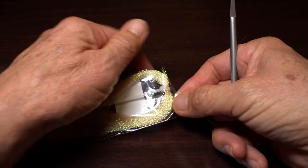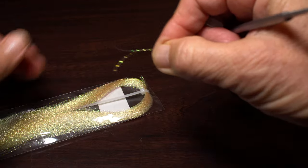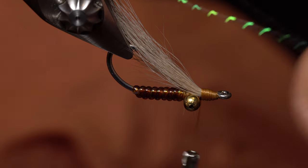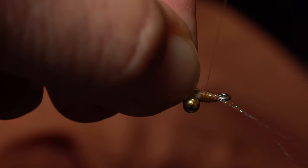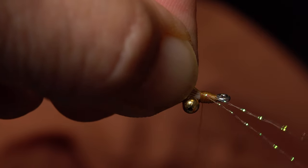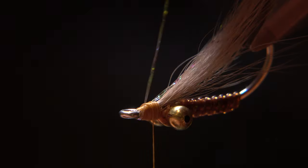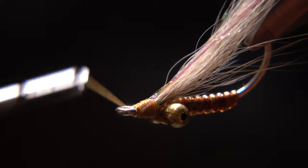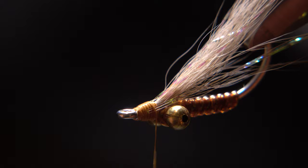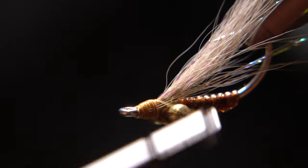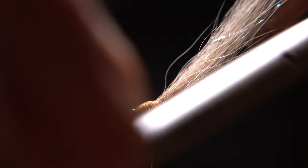To add a bit of pop to the wing, snip two strands of the same crystal flash you used on the body, free from the hank. With the tips of one end angled slightly upward, and extending to the back edge of the hook bend, secure the flash to the near side of the hook, behind the eye. Once it's locked down, loop the flash under the hook shank, and continue taking thread wraps to secure to the far side of the shank, so it points up at the same angle as the other side. When you're satisfied with the look of the flash, snip the excess off, so it extends to the back edge of the bend on both sides of the hook.